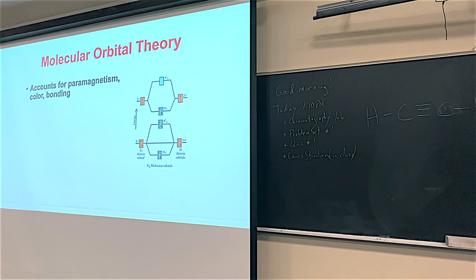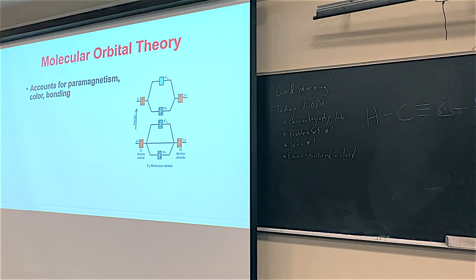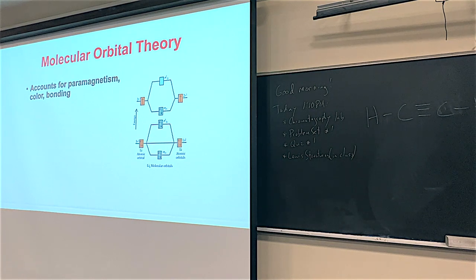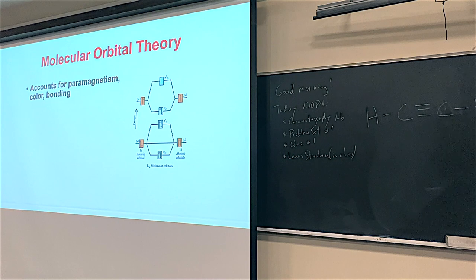Everything we've seen so far has been about hybridization theory, also known as valence bond theory. Valence bond and hybridization theory is wonderful for quick back-of-the-envelope calculations — you don't need a computer or sophisticated quantum calculations. But hybridization is limited. So now we're going to look at the big brother of hybridization: molecular orbital theory, or MO theory. MO theory is a much more comprehensive and honestly more accurate theory to use. It accounts for paramagnetism, can be used for color, and does a great job for bonding.